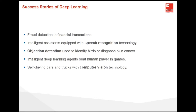A key ingredient in digital assistants is the ability to recognize speech accurately. Gradually, the accuracy of such systems has increased to the point where they reach human parity for certain applications. Object recognition, likewise, has come a long way. Estimating the object in a picture was a fairly challenging task in 2010. On the ImageNet benchmark, researchers from NEC Labs and the University of Illinois at Urbana-Champaign achieved a top-five error rate of 28%.